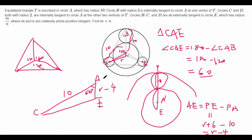Now let's find CE. CE is even easier — it's just the radius of circle C plus the radius of circle E, which equals R plus 2. So we've now found all the sides of triangle CAE in terms of R, and we also know one angle, which is the nice angle of 60 degrees. So we can use the law of cosines to find R.